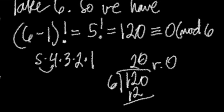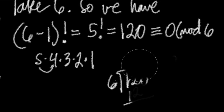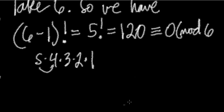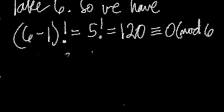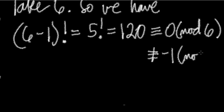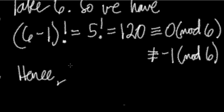Since (6 − 1)! = 5! = 120 ≡ 0 (mod 6), and 0 is not congruent to −1 mod 6, it is incongruent to −1 mod 6. Hence, 6 is not a prime.